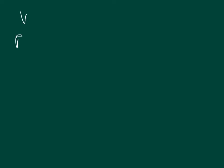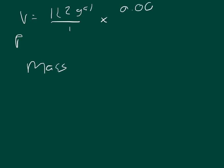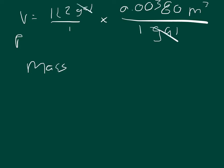The problem gives us a volume in gallons and a density in kilograms per cubic meter. We need to convert the gallons into cubic meters. We take 11.2 gallons over 1 and multiply by 0.00380 cubic meters per 1 gallon, so the gallons cancel out. The density is 7.3 times 10 squared, which we can write as 730 kilograms per cubic meter.